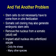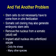Stem cells do not actually have to come from fertilization. We use somatic cell cloning to generate embryonic stem cells. All you have to do is remove the nucleus from a somatic cell - any cell in your body - implant that nucleus into an enucleated oocyte, and you get an embryo. This is used to make Dolly the sheep.